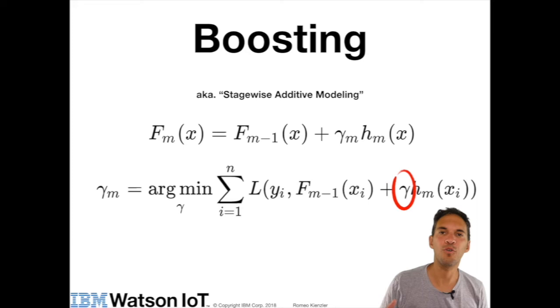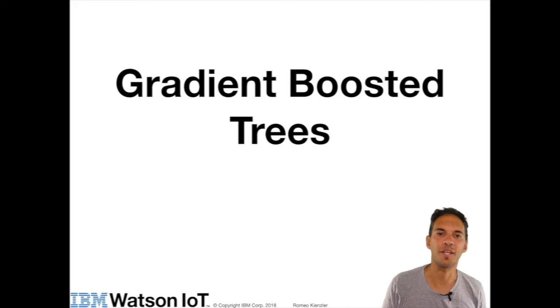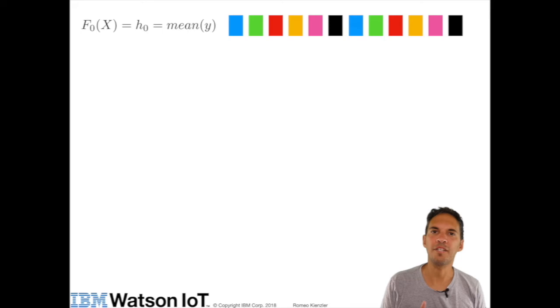So now let's have a look how gradient boosted trees are working. So let's consider our training data set. So we start with a weak learner h_0 and we just take the mean of y as a prediction. Of course this is not a very good model. Therefore we have an error term.